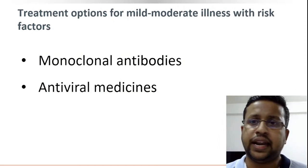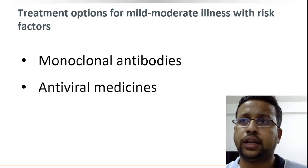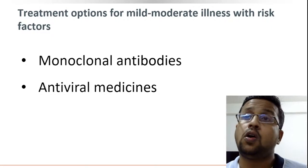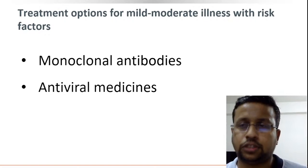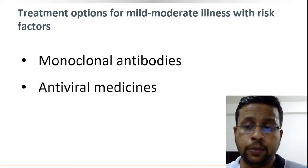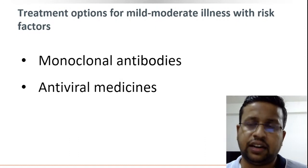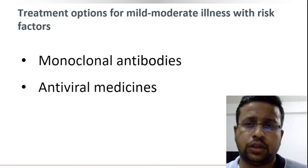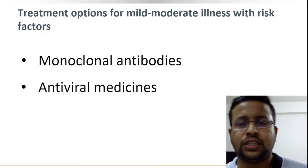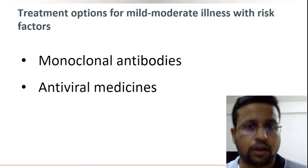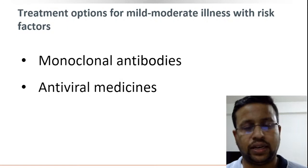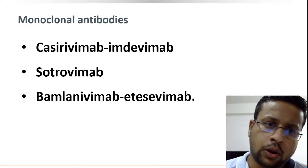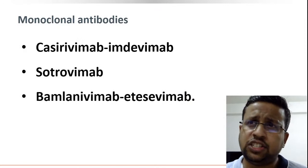However, when the patient has risk factors for progression, treatment should be considered. Risk factors include age more than 60, obesity (BMI >25), or concomitant chronic illnesses such as hypertension, diabetes, coronary artery disease, chronic liver disease, chronic kidney disease, immunosuppressive drug intake, HIV infection, blood disorders, and rheumatic diseases. Such patients should be considered for monoclonal antibodies or antiviral medicines.